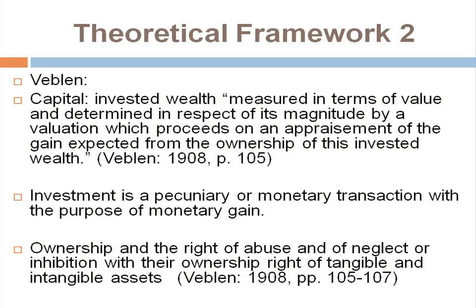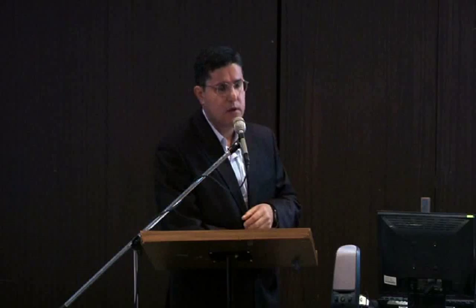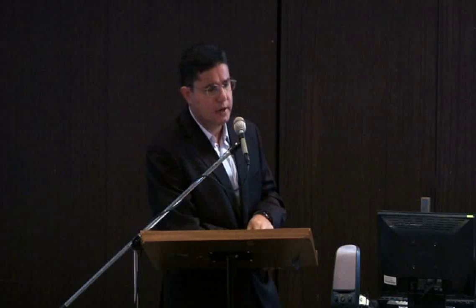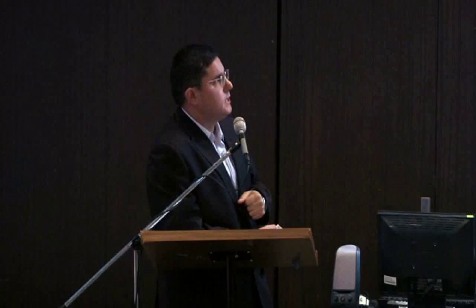Veblen is important in the sense that he agrees with Marx about the nature of capital — first that it is an ownership category. With ownership, investors or owners have, he argues, the right to abuse, neglect, or inhibit, which are actually against the interest of society, but ownership gives these rights. Capital can be tangible and intangible, but in the first place, capital is a monetary category. We can see it in the form of investment in intangible and tangible assets, but the final objective is to make more money.